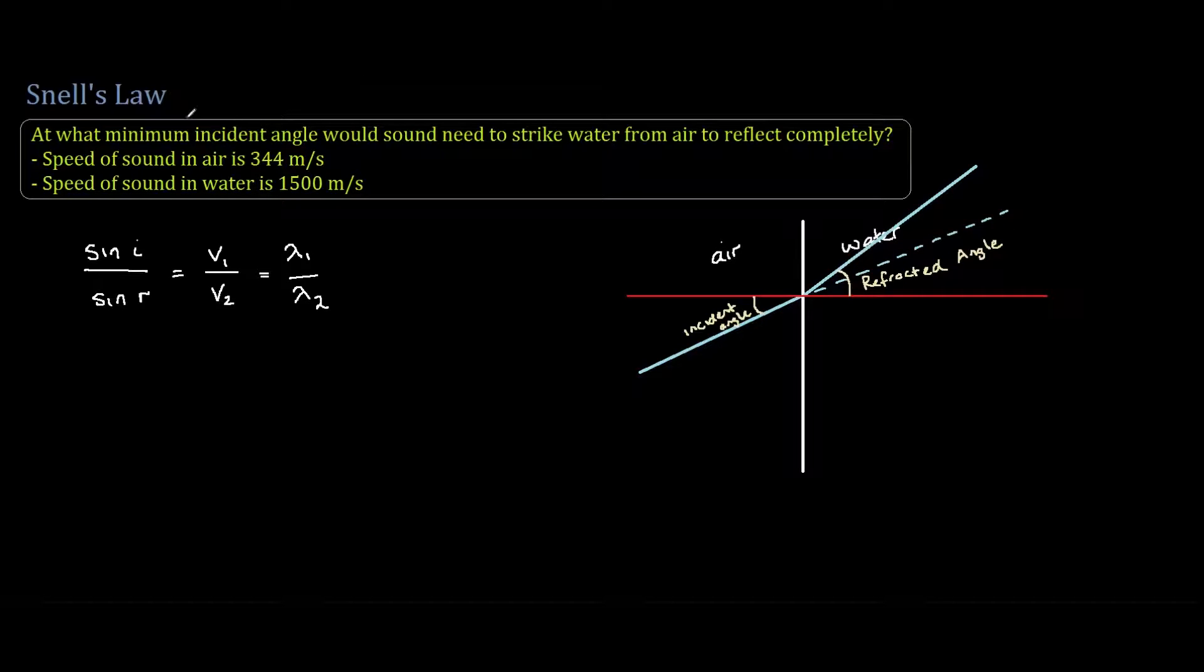So in this example, we are asked what angle this sound needs to come in for it to be reflected completely. What this means is that R equals 90 degrees, because if this was our sound wave to be reflected completely, it would go up here and form a 90 degree angle to the normal.